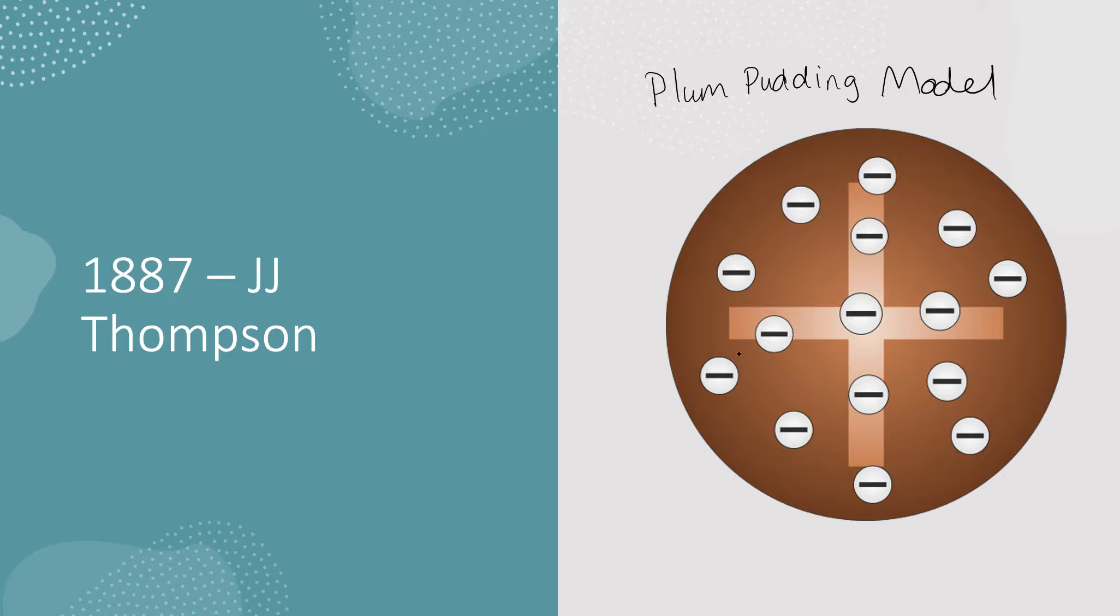We have this ball of positive charge and we have negative electrons scattered around. So this over here is the ball of positive charge and we have these negative electrons surrounding it.